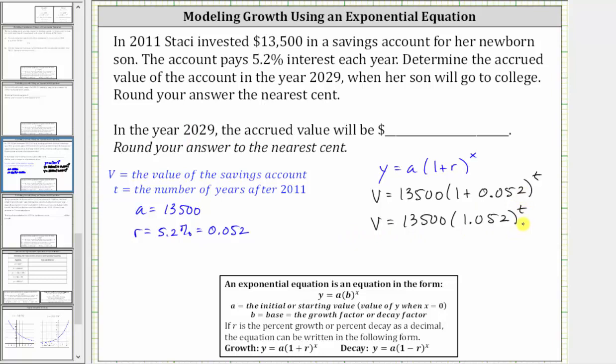Now that we have the equation, we can determine the value in 2029. We need to be careful though, t is not equal to 2029. t equals 2029 minus the base year of 2011. So to make our prediction, t equals 2029 minus 2011, and therefore t is equal to 18.